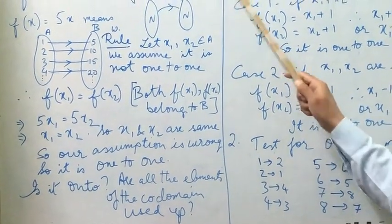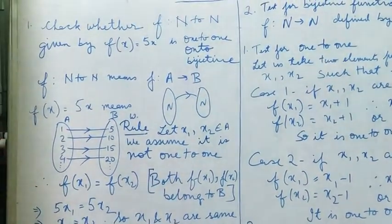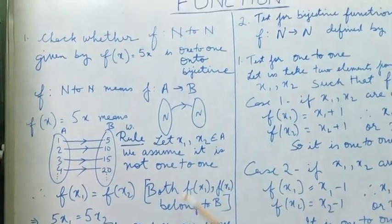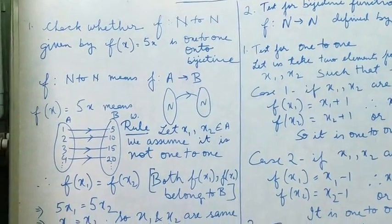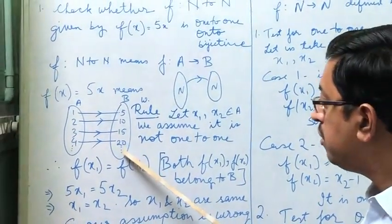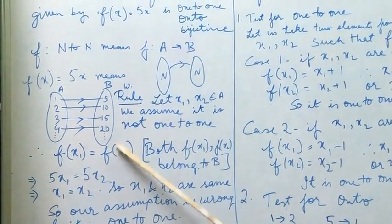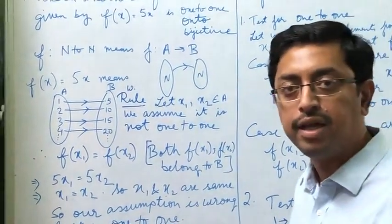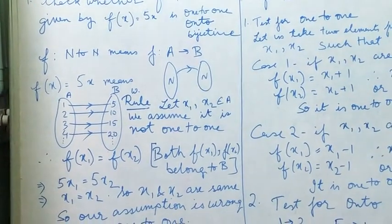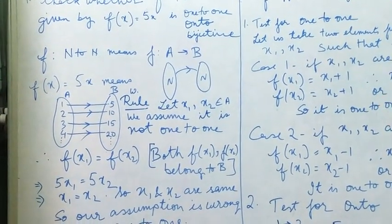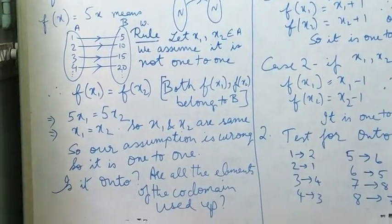Now our second requirement is to check whether it is an onto function. If it is an onto function, then every element of the co-domain B should be used. But is it used? What value will give us natural number one, natural number two, natural number three? Nothing. So we would be having many numbers inside the co-domain which are not used up, which do not have a pre-image in set A. Therefore it is not an onto function.